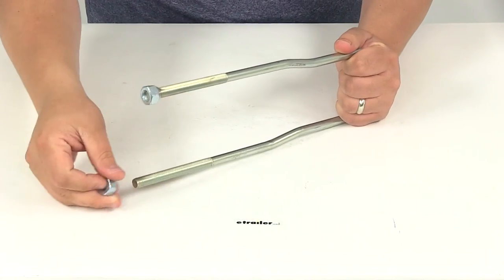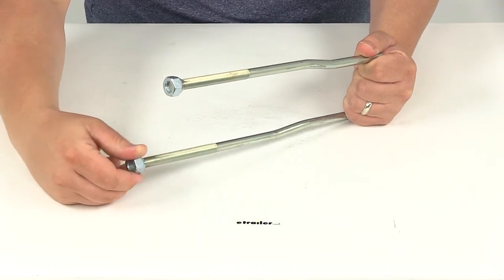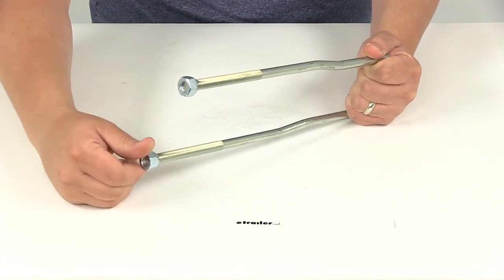Once you have the lug nuts tightened down, you're set to go. Just make sure they're tight enough, holding the tire securely on the carrier and against the frame of your trailer.